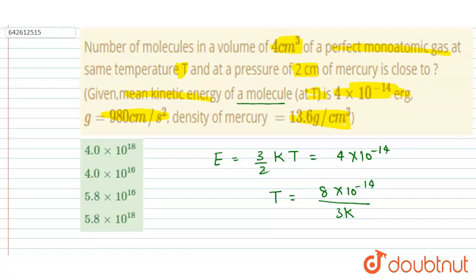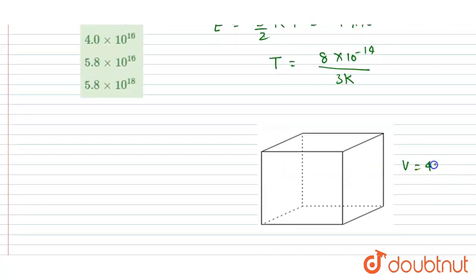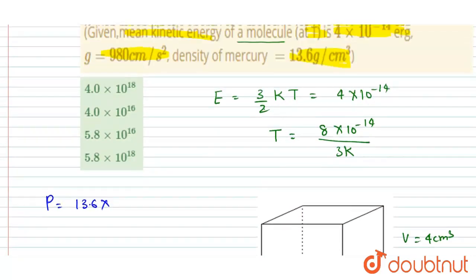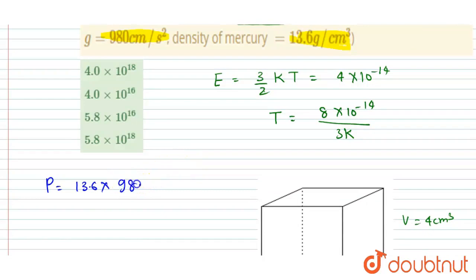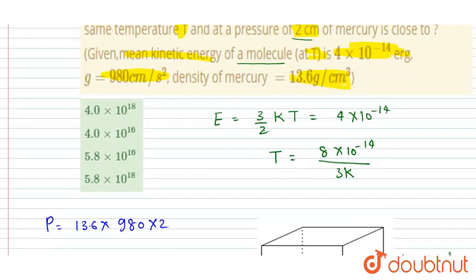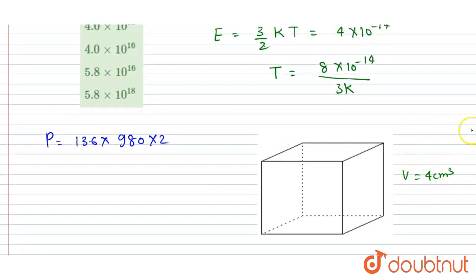The gas volume is given as 4 centimeter cube and the pressure is 2 centimeter of mercury. We calculate the pressure using P = ρgh, where ρ is 13.6 gram per centimeter cube as given in the question, g is the gravitational acceleration, and h is 2 centimeter.